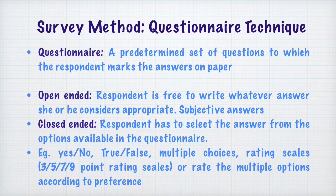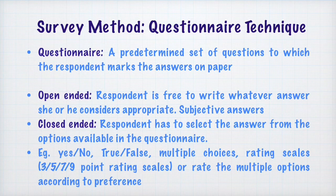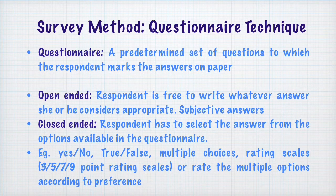Closed-ended questions can have options in many forms: yes or no, true or false, multiple choices, or rating scales such as a 3-point or 5-point rating scale. A rating scale is a dimension along which responses are given. For example, if asked 'how was your day today?' with options ranging from very good, good, average, bad, to worst — that is a 5-point rating scale where you choose one response. This is an example of a closed-ended question.